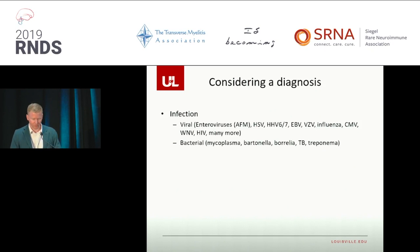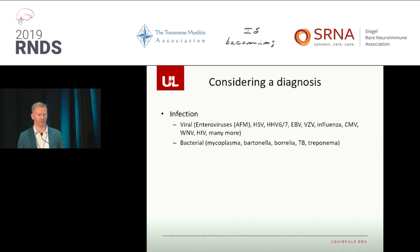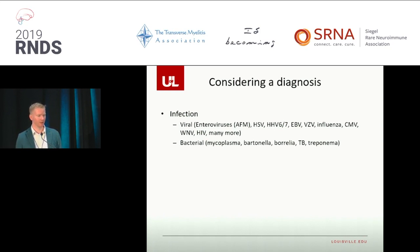When someone asks what caused their transverse myelitis, we first ask: was it actually transverse myelitis, and was it caused by something other than an idiopathic or autoimmune reaction? Infection would be the first thing to consider. There are many viruses — some we can test for, some we can't, some we probably don't even know exist. The enteroviruses and herpesviruses are known to attack nerve cells especially in the spinal cord. Varicella (the chicken pox virus), influenza, West Nile virus, and HIV are examples. There are also bacterial causes: mycoplasma, Bartonella, Borrelia causing Lyme disease, tuberculosis, and syphilis.